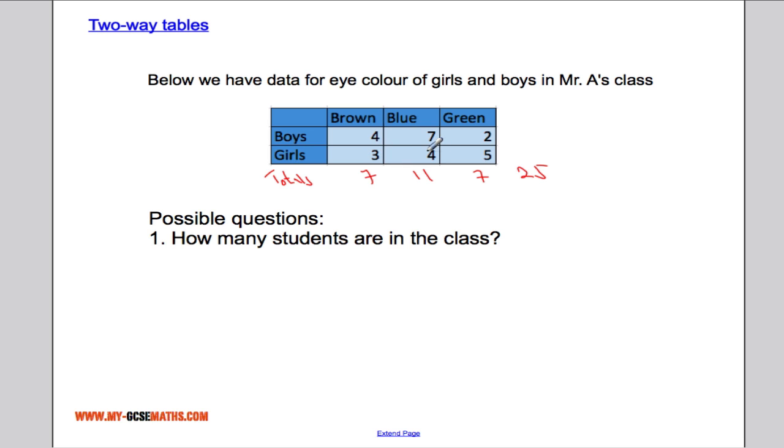What else? We've got three and four is seven, seven and five is 12. There are 12 girls, and there must be 13 boys. And let's just check that. Seven and four is 11, and two is, in fact, 13. So we can easily work out the totals by adding the columns and rows.